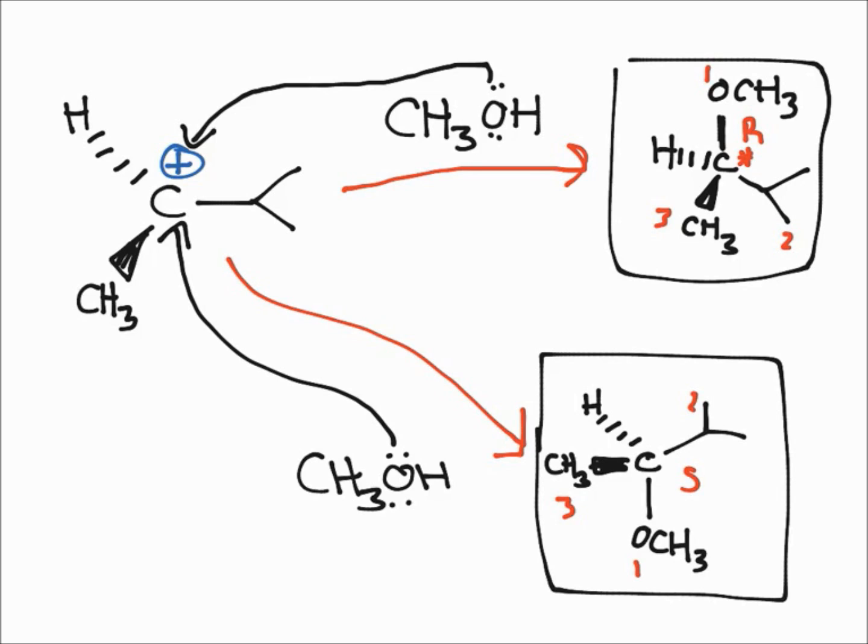Sometimes the configuration is retained while sometimes it's inverted. If you ever have this SN1 reaction, the stereochemistry of the end products will be a 50-50 mix, and that is called the racemic mix. It's exactly 50-50 percent, so it's not 49-51, it's exactly 50-50, and that's probably something that's going to be on tests in the future.